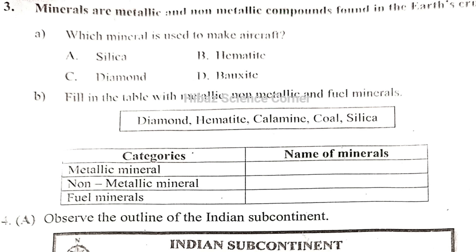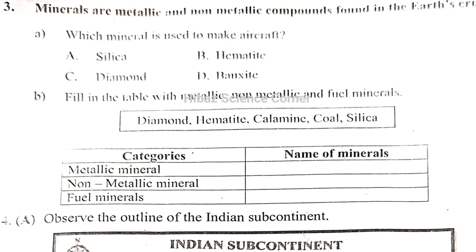Fill in the table with metallic and non-metallic and fuel minerals. The list includes Diamond, Hematite, Calamine, Coal, and Silica. Metallic minerals: Hematite and Calamine. Non-metallic minerals: Diamond and Silica. Fuel minerals: Coal.